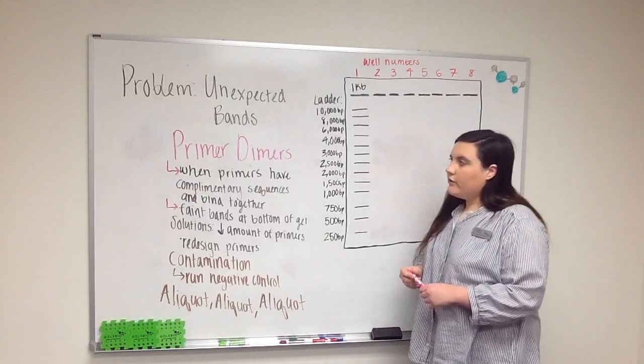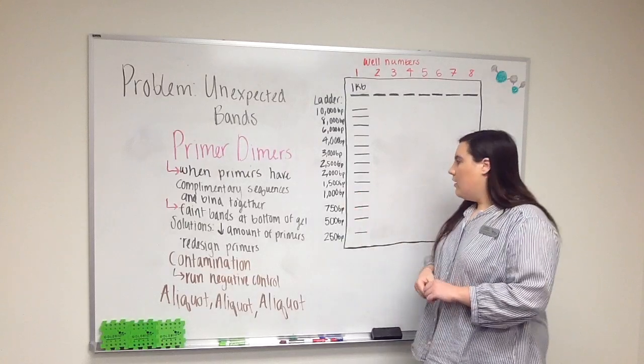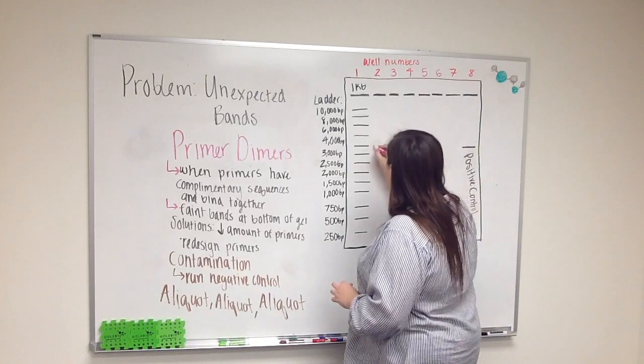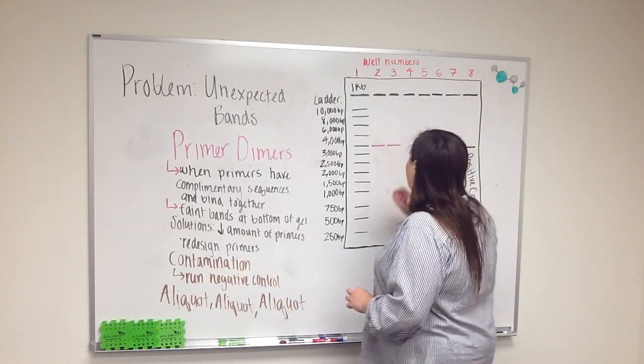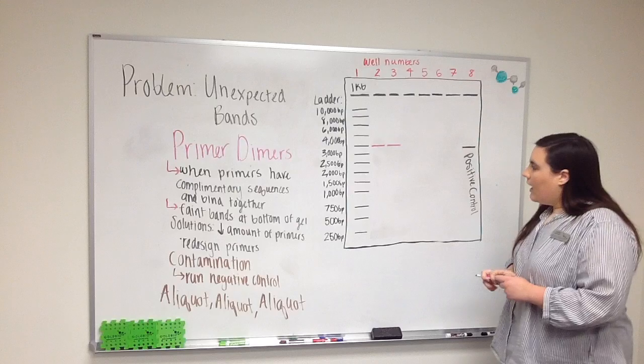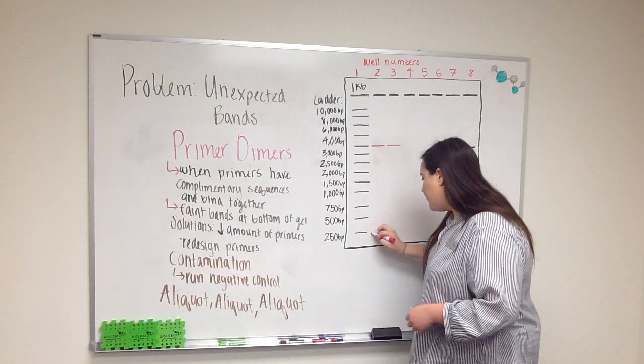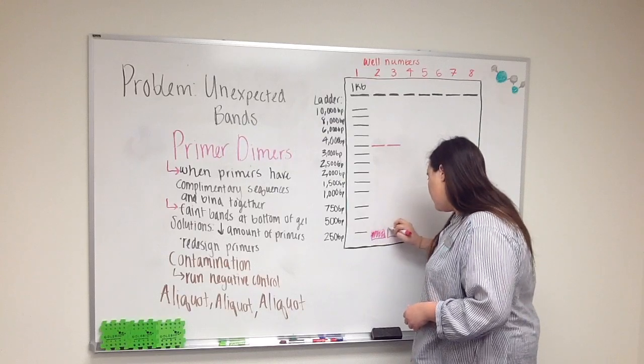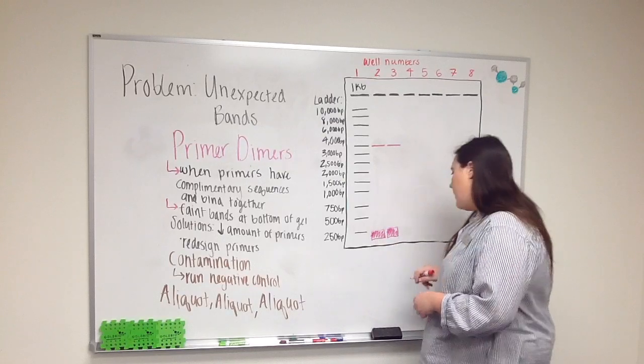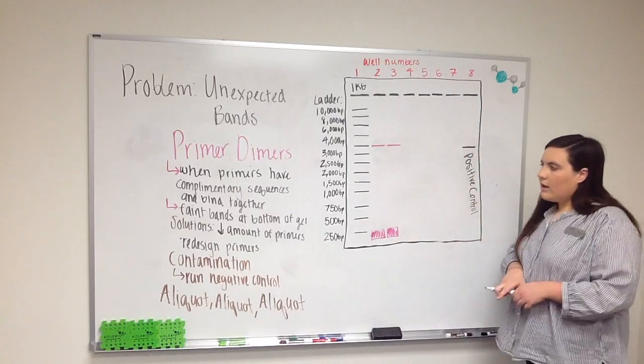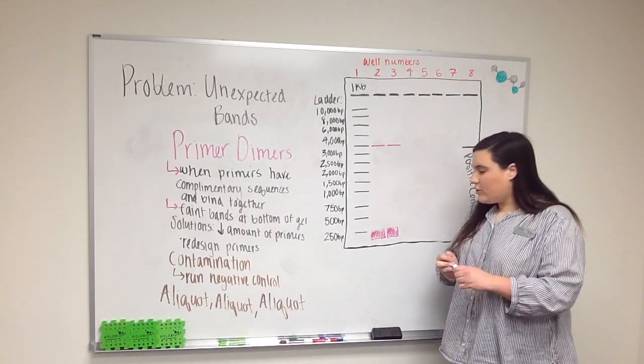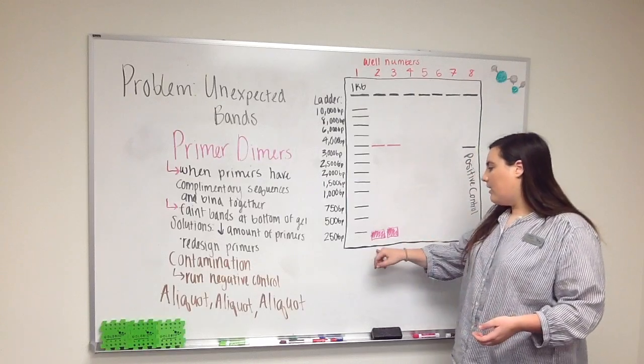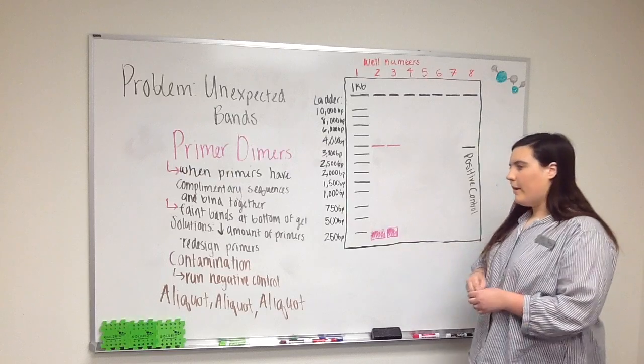So the first issue I'm going to be discussing is primer dimers. What primer dimers appear as on your gel is that you'll have your expected band, draw it in lanes 2 and 3, and you'll also have a small band at the bottom that's very faint.